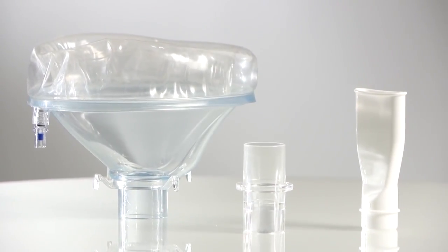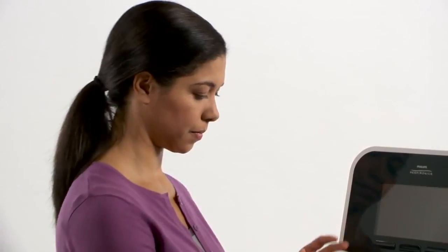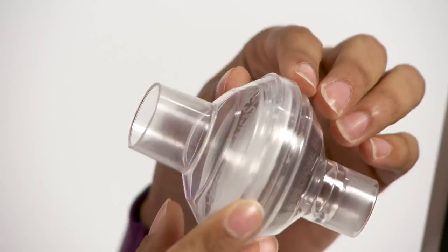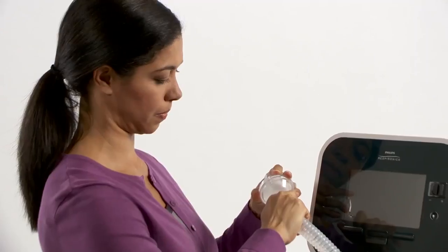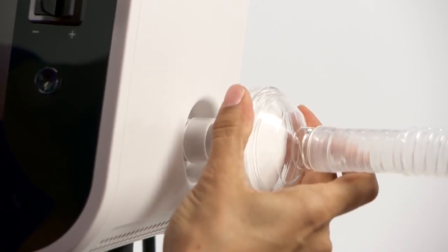CoughAssist T70 can be used with a mask, tracheostomy tube, or mouthpiece. To build the patient breathing circuit, attach a bacteria filter to the breathing circuit connection. Attach the circuit tubing to the bacteria filter. Press the filter onto the connector on the side of the device.